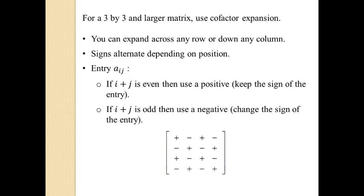For a 3 by 3 and larger matrix, we have to use something called cofactor expansion. You can expand across any row or down any column, and the signs alternate depending on position. For entry A-sub-ij — that means the ith row, jth column — if i plus j is even, you use a positive, which means keep the sign of the entry. If i plus j is odd, you use a negative, which means change the sign of the entry. You always start with a positive in the upper left corner and alternate outward from there.